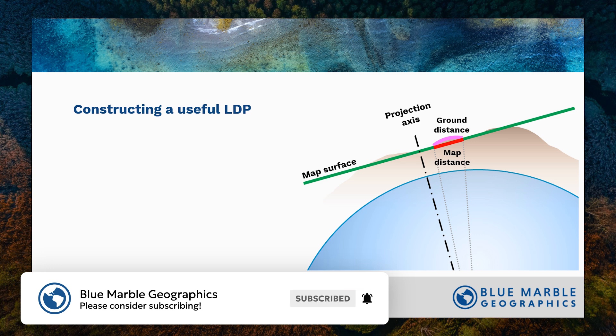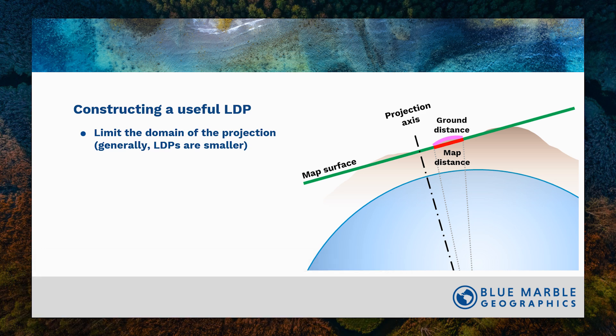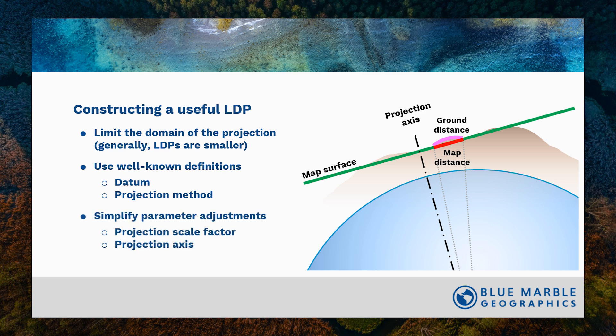So how do we construct a useful LDP? We want to limit the domain of the projection to reduce the separation between the map and the surface of interest — so generally LDPs are smaller than traditional maps. We want to use well-known definitions, such as well-known datums and projection methods, including those three mentioned previously. And we want to simplify the parameter adjustments, such as just looking at the projection scale factor and the projection axis.